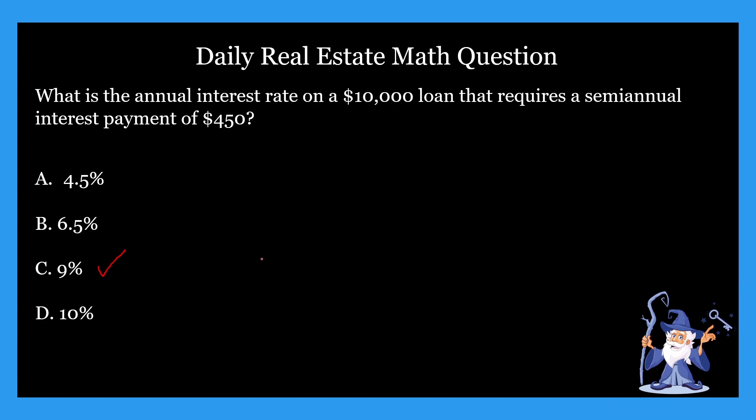This is different than the two problems we did before. It says the semi-annual interest payment. So what does that mean? Semi-annual just means two, just think of it as the number two, meaning we have to double this number, this $450. In problems where there's semi-annual interest payment, we have to double the number they're giving us. So we're going to take $450 and multiply that by two, which gives us $900.